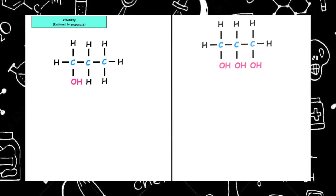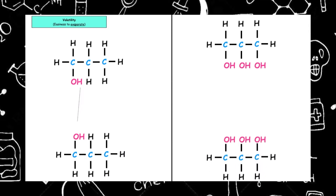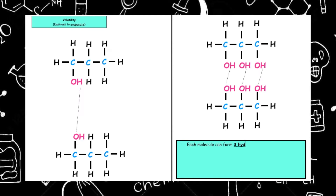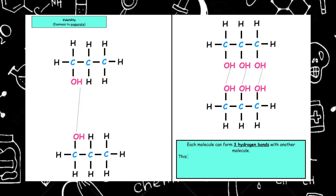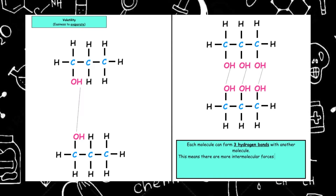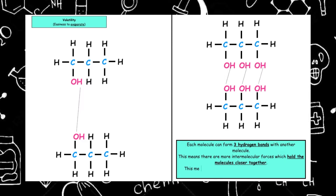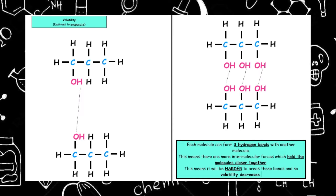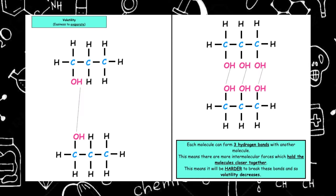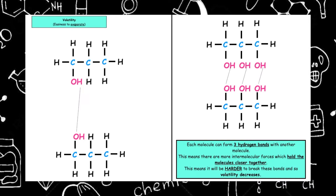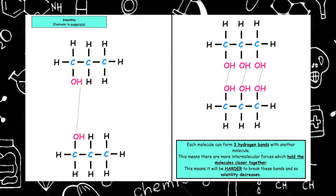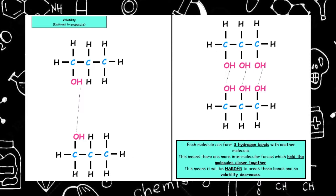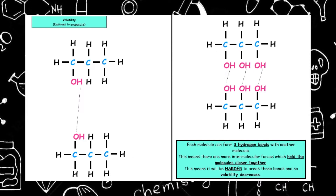The third property we focus on is volatility, which is the easiness to evaporate. Again, if we look at propan-1,2,3-triol, each molecule can form three hydrogen bonds with another molecule. This means there are more intermolecular forces holding the molecules closer together, and therefore it will be harder to break these bonds. The volatility — that is, the easiness to evaporate — would decrease as it is harder to break the larger quantity of hydrogen bonds between the molecules.